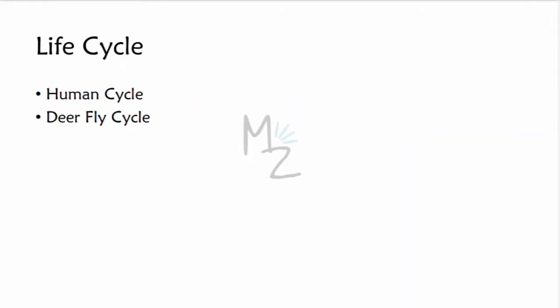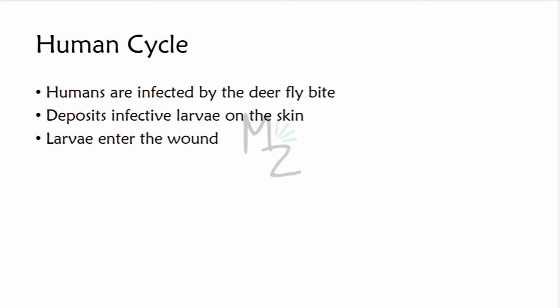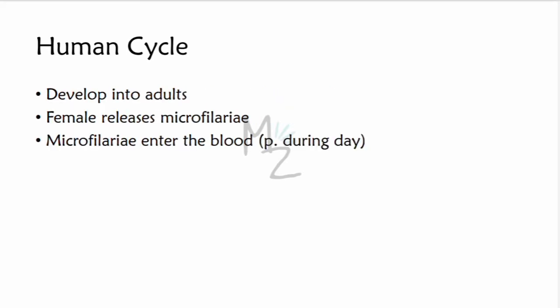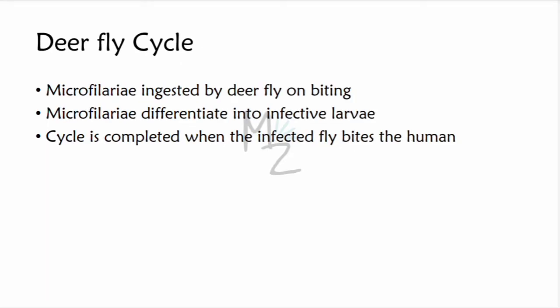The life cycle of Loa Loa has two stages: the human cycle and the deer fly cycle. In the human cycle, humans are infected by the bite of the deer fly, the mango fly, or Chrysops, which deposits infective larvae on the skin. The larvae enter the bite wound, wander in the body, and develop into adults. The female adults release microfilariae that enter the blood particularly during the day. The microfilariae are then taken up by the fly during a blood meal, starting the deer fly cycle, and they differentiate into infective larvae which continue the cycle when the fly bites the next person.